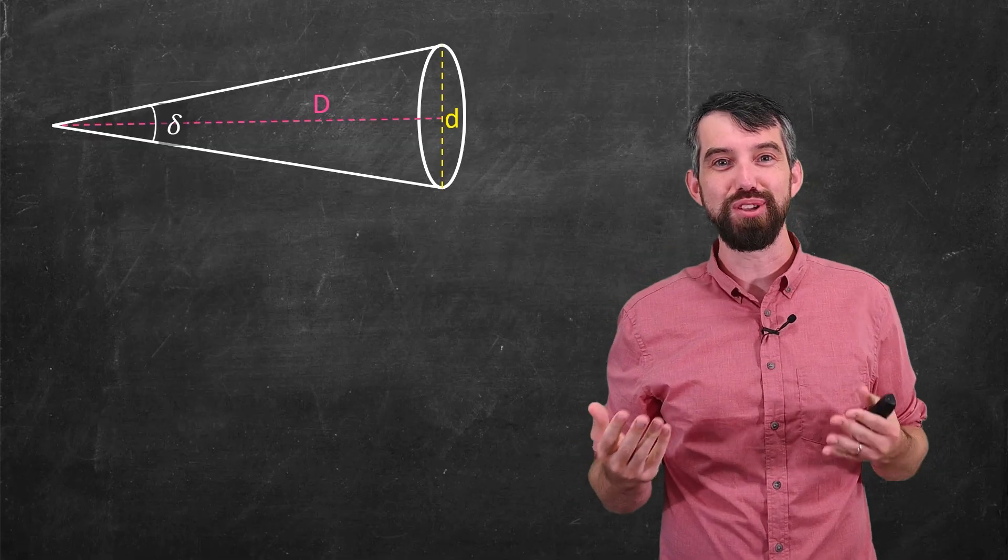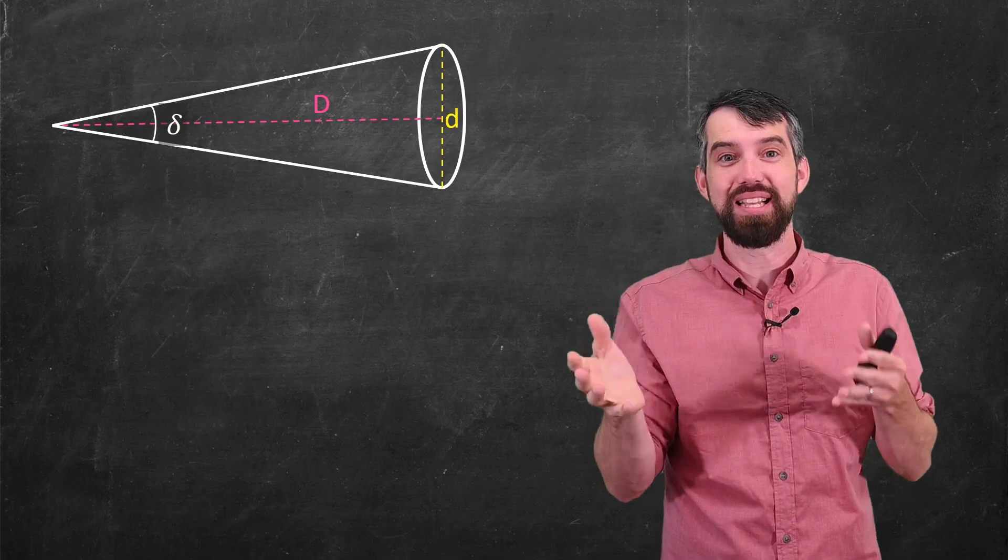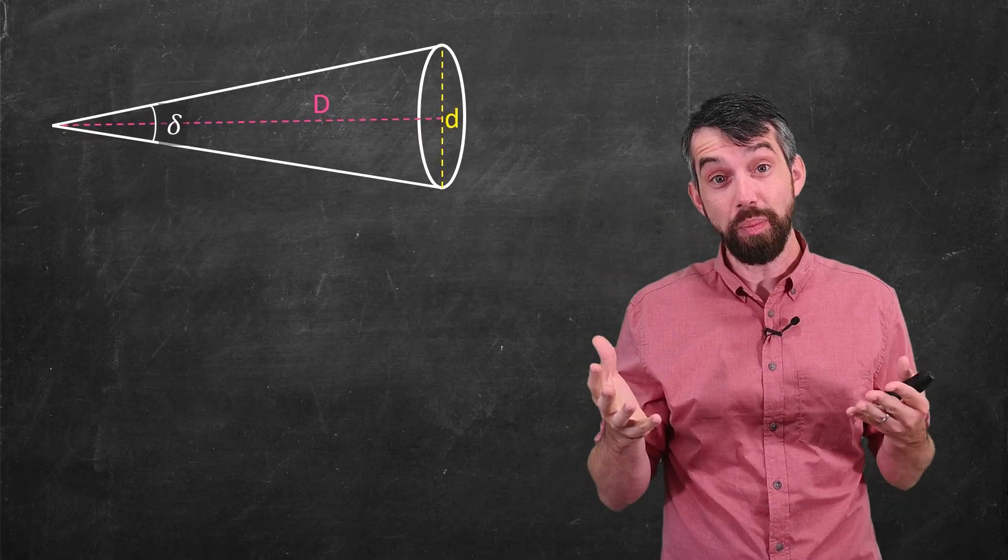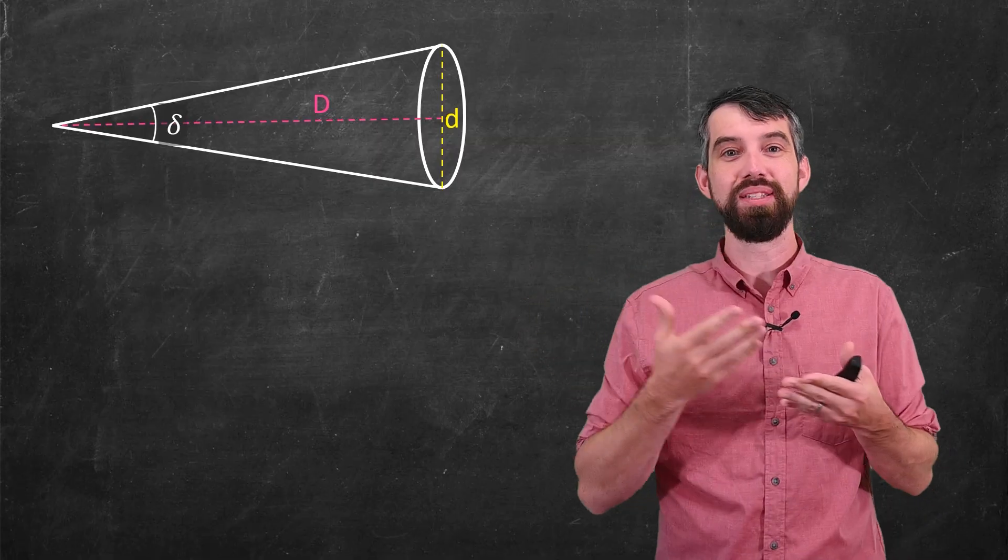So how do you get to the diameter of the supernova if you do know the distance to it? The other thing you know is if you look out at the sky, you can figure out what kind of angular distance does that supernova obey? What percentage of the Earth's sky is occupied by this object from our vantage point?